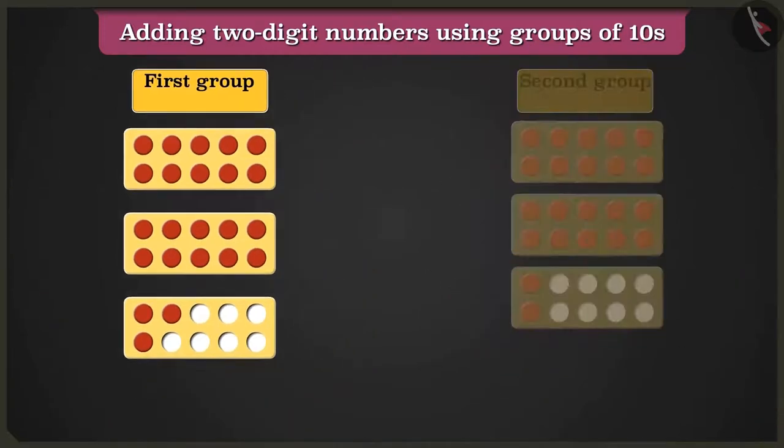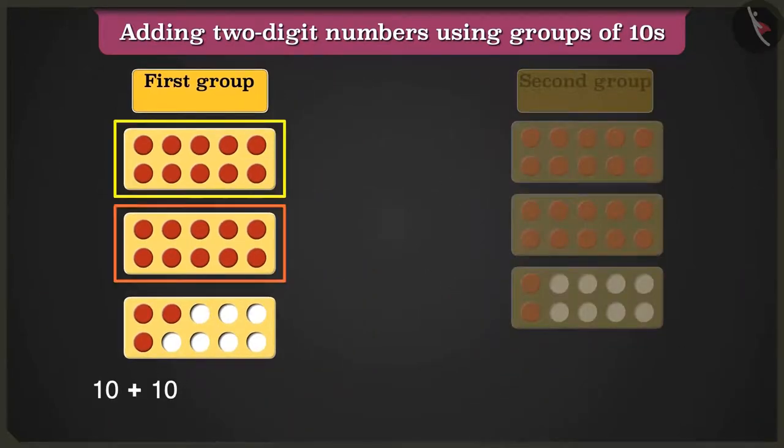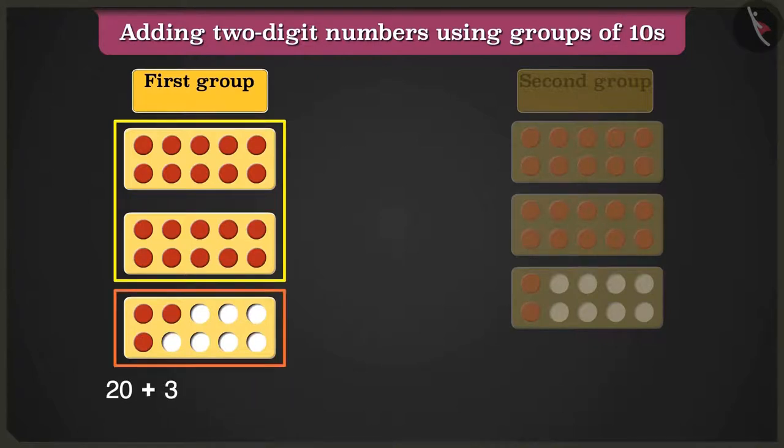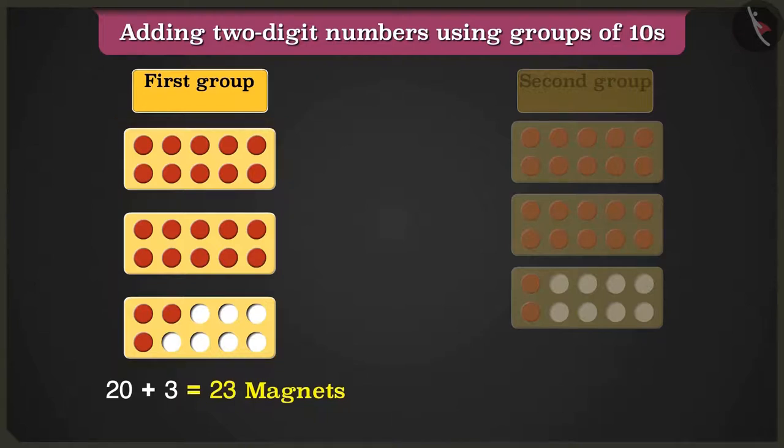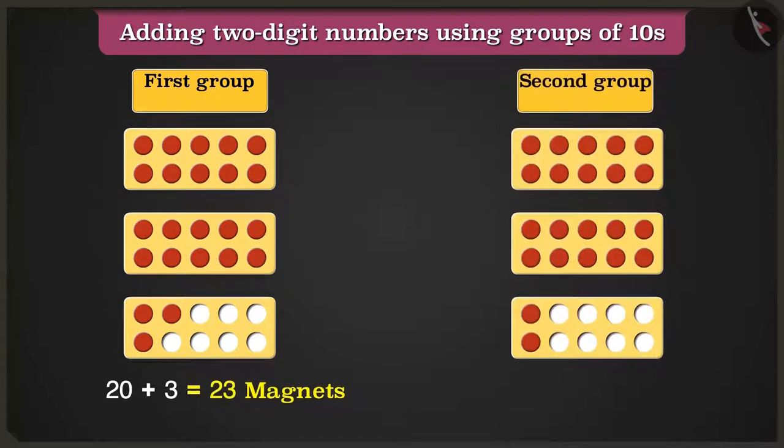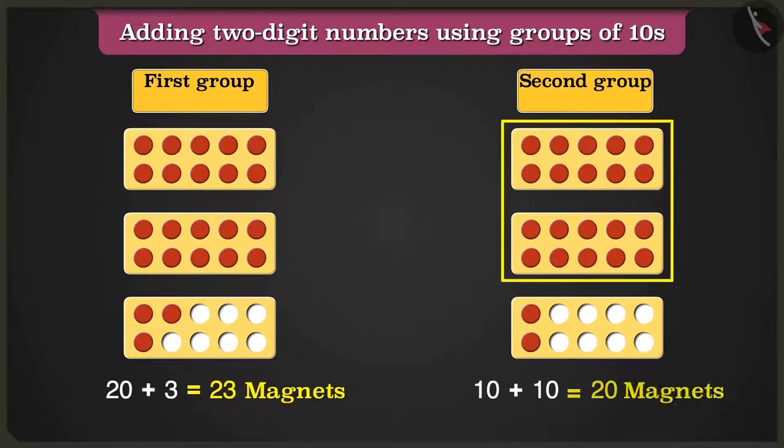In the first group of the tens frame, adding 10 and 10 makes 20. 20 plus 3 equals 23 magnets. In the next group of tens frame, adding 10 and 10 makes 20, and adding 2 more will be equal to 22 magnets.